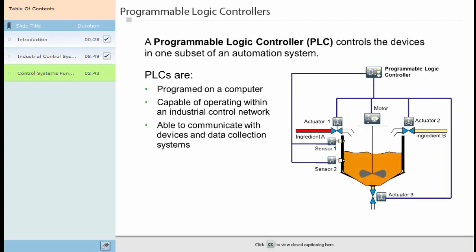A programmable logic controller controls the devices in one subset of an automation system. The PLC is designed to read feedback and, based on a given set of logic, control the behavior of devices within a process. PLCs are programmed on a computer, capable of operating within an industrial control network, able to communicate with devices and data collection systems. A simple example of a PLC is a programmable thermostat. Based on settings entered by the user, the PLC will switch the heater on when a temperature threshold is reached.